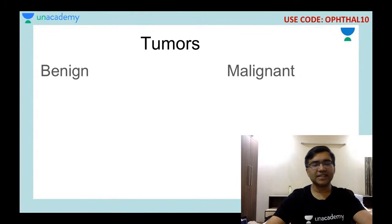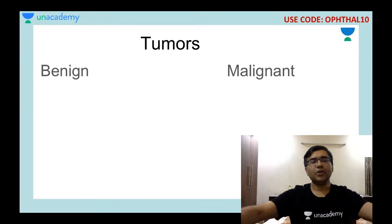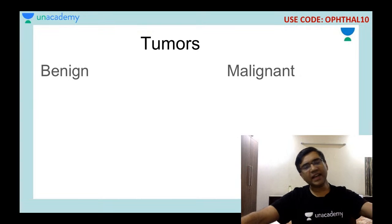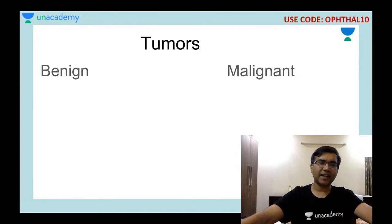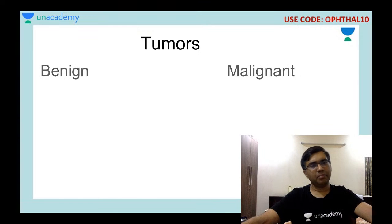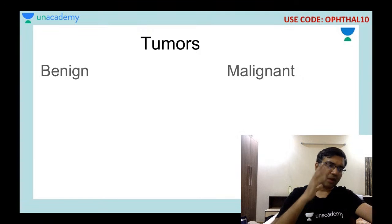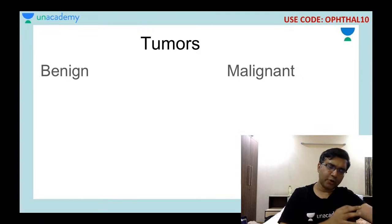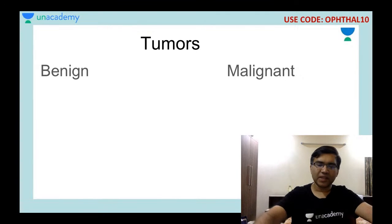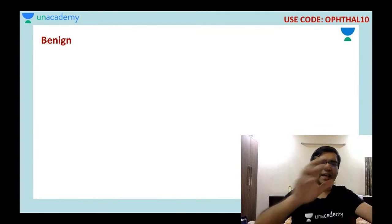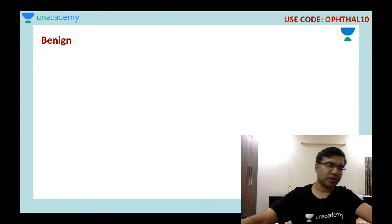So, the eyelid tumors — any type of tumor — we basically divide into two parts: benign and malignant tumors. Now, if I talk about the eyelid tumors specifically, there are many types of benign tumors.